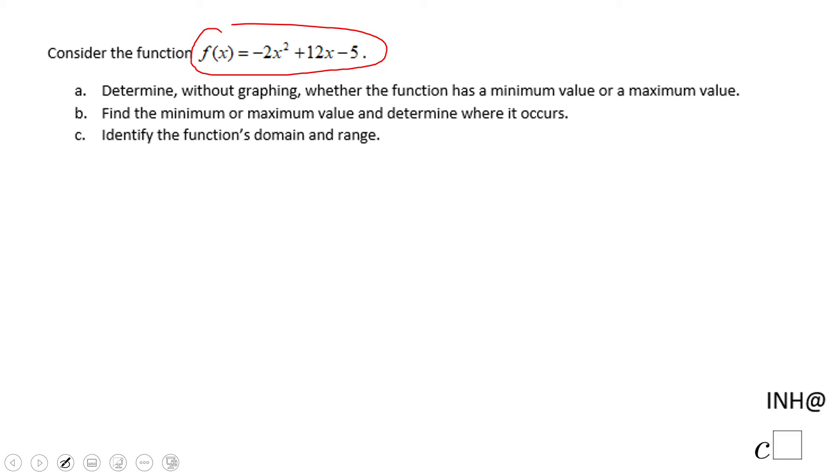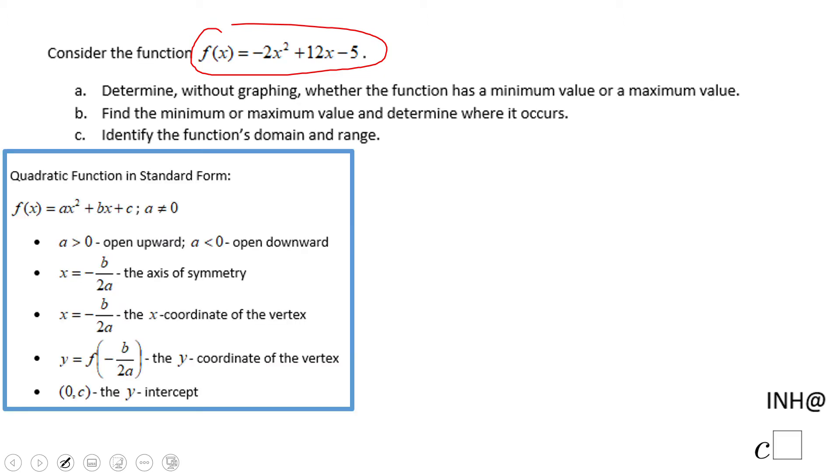And it's a very simple question. You're going to look to what we call this a, and in this case we notice it's negative 2. We have an a that is less than 0, that means it's open downward. It's open like this, which means this is a maximum. So whenever you have an a that is negative, you have a maximum.